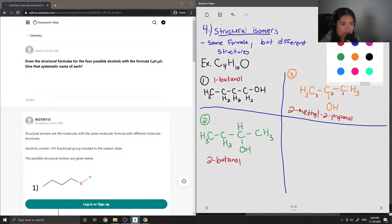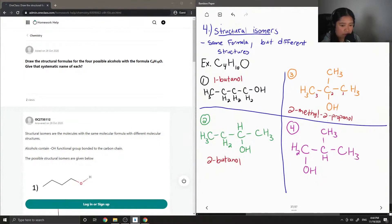Lastly, we can draw our fourth isomer. I'm going to do a similar thing where we have the carbon up here, but this time I'll put the alcohol group on one of the carbons at the end. So we have 6, 7, 8, 9, 10 hydrogens, 4 carbons, 1 oxygen.